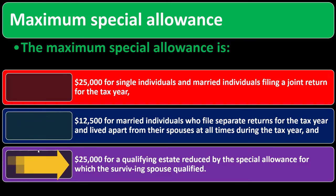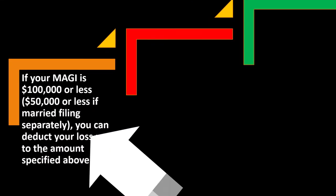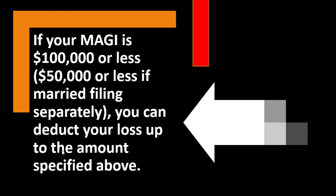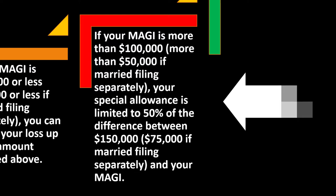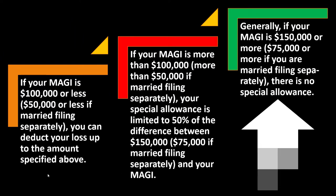There's also $25,000 for a qualified estate, reduced by the special allowance for which the surviving spouse qualified. If your MAGI — your modified adjusted gross income — is $100,000 or less ($50,000 or less if married filing separately), you can deduct your loss up to the $25,000 amount. If your MAGI is more than $100,000 (more than $50,000 if married filing separately), your special allowance is limited to 50% of the difference between $150,000 ($75,000 if married filing separately) and your MAGI. If your MAGI is $150,000 or more ($75,000 if married filing separately), there is no special allowance.